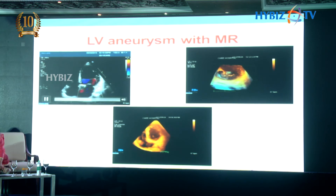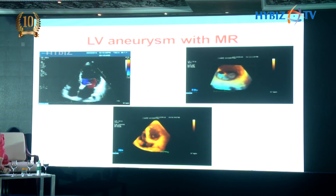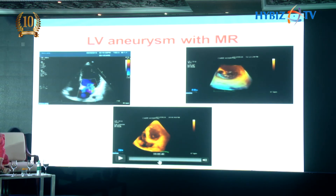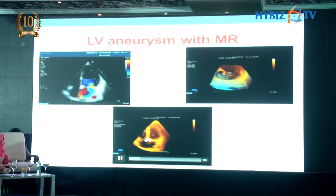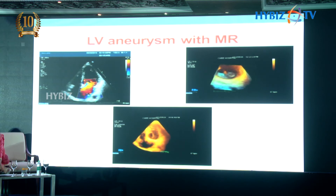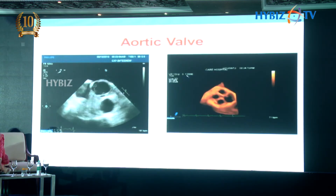This is a patient with LV aneurysm and mitral regurgitation. On 2D imaging, the aneurysm is not clearly picked up, but transthoracic 3D clearly shows a large aneurysm pulling the mitral annulus away and resulting in severe mitral regurgitation. This is an example of transthoracic 3D providing extra information that 2D did not adequately demonstrate.